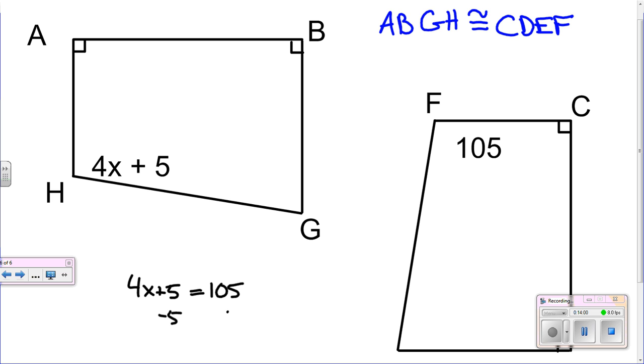So we subtract 5 from both sides and you get 4X equals 100. Divide by 4, X equals 25. Now if you plug that in here, 4 times 25 is 100 plus 5 is 105. You should always make sure that you get the same answer.